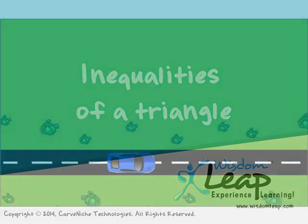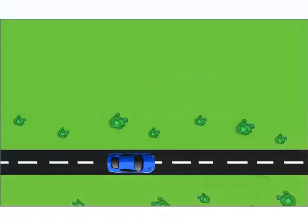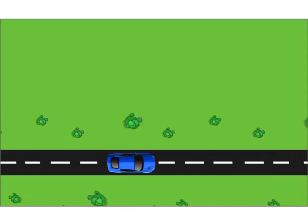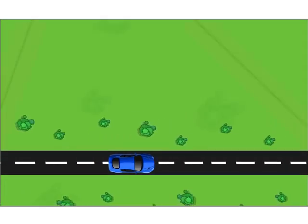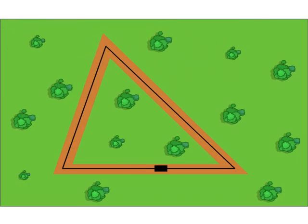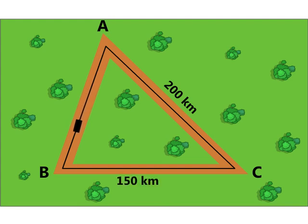Peter was driving to three cities, A, B and C, that form a triangle. If the distance between cities A and C is 200 km and the distance between C and B is 150 km,